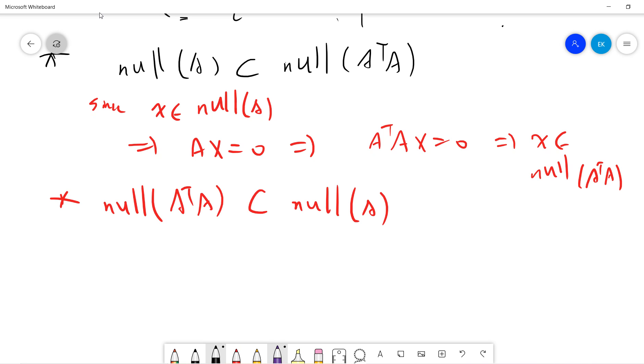This is also easy. If we take X such that A^T A X equals zero, then X^T A^T A X equals zero. This means the length of AX squared equals zero, so by the property of length, AX equals zero.